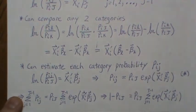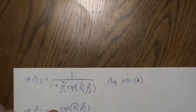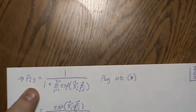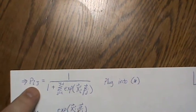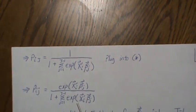And then we can plug it back into here. So the next step, we do that, we come up with our estimate for pi capital J, which is this, and we plug it back into star, and we get this. So that's our estimate for each category probability.